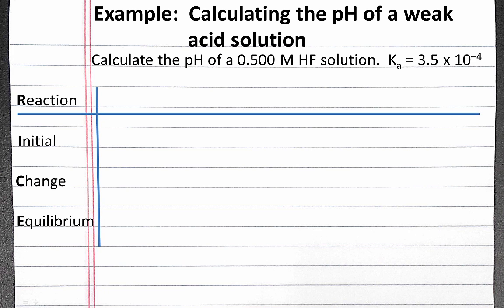First, we'll set up our RICE table. In the first row, we'll write the equation for the ionization of HF. In our next row, we can fill in the initial concentrations of each compound. The initial concentration of HF is 0.5 molar.